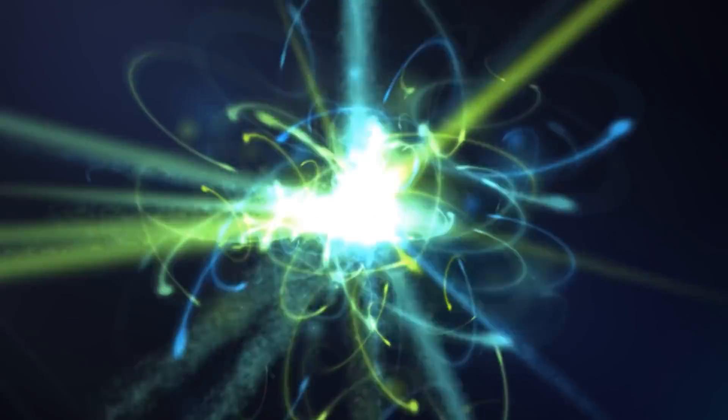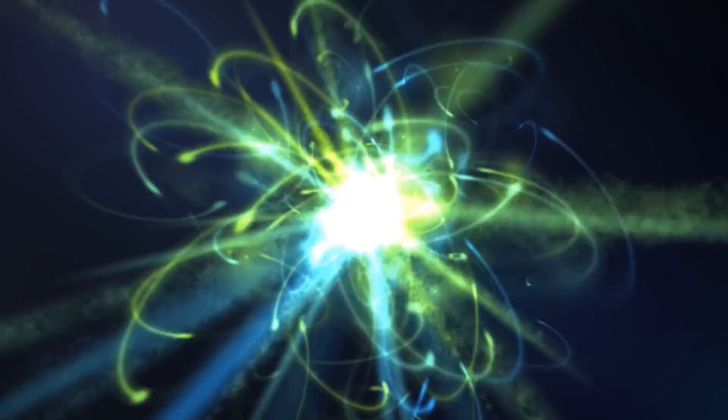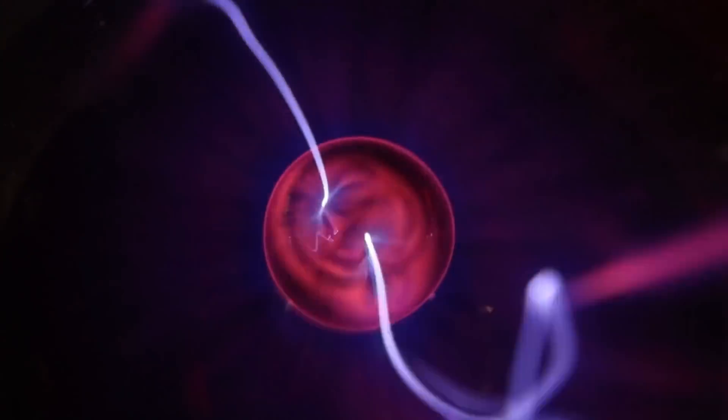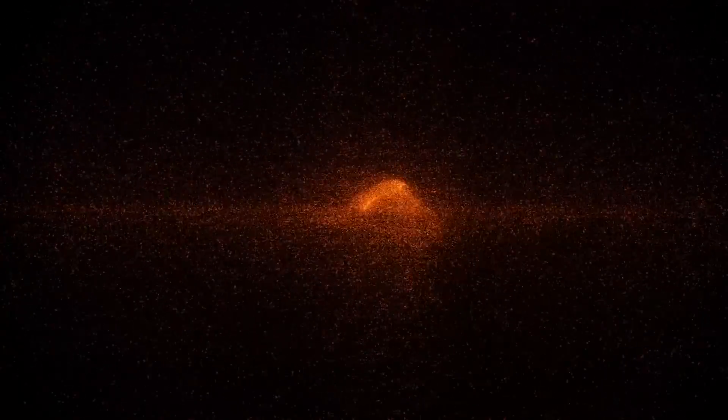However, these are the antiparticles of electrons. A possible explanation for this positron surplus could be the annihilation of colliding dark matter particles.